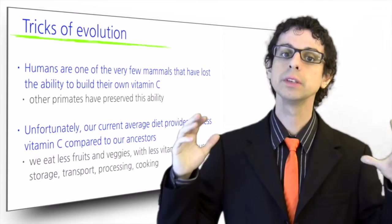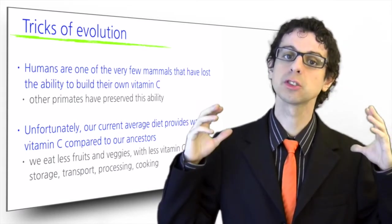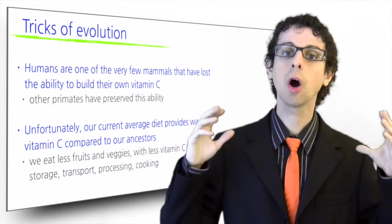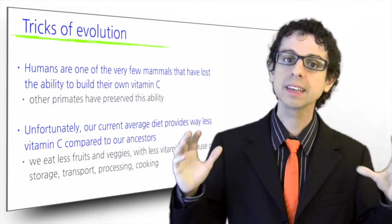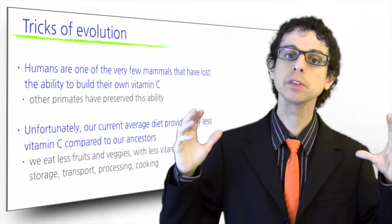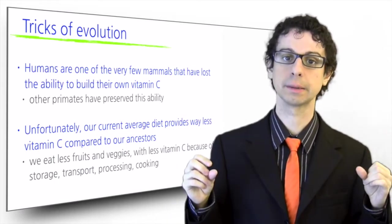Not only would they eat a lot more fresh fruit and vegetables, but they would also eat them without much processing and storage, all of which can cause major losses of vitamin C. Besides, they would also eat most of their food raw or undercooked, and cooking also destroys vitamin C.